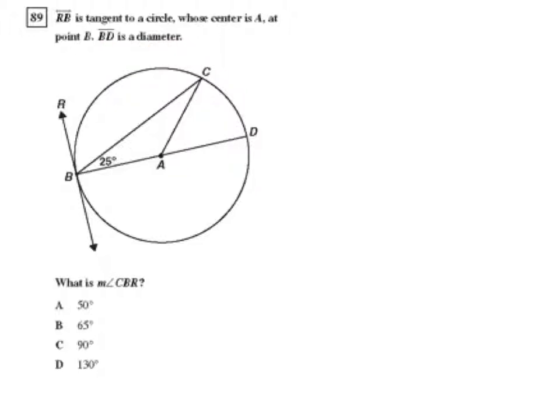Okay, so they tell us we have a circle with center A. Line segment RB is tangent to the circle at point B, and BD forms a diameter. Okay, so we have a lot of useful information.